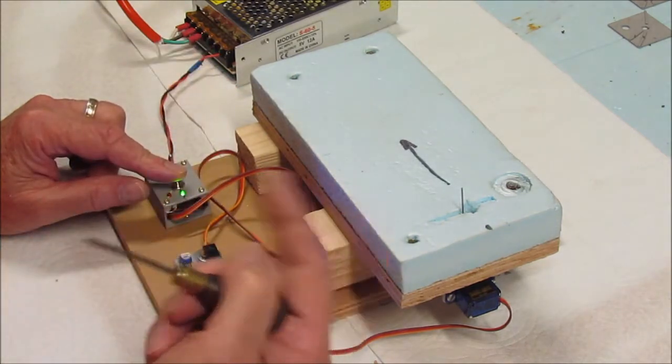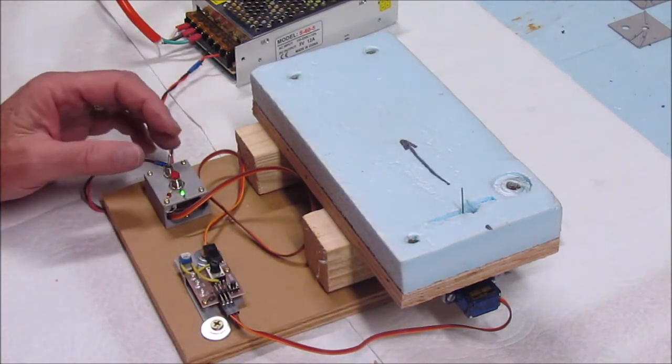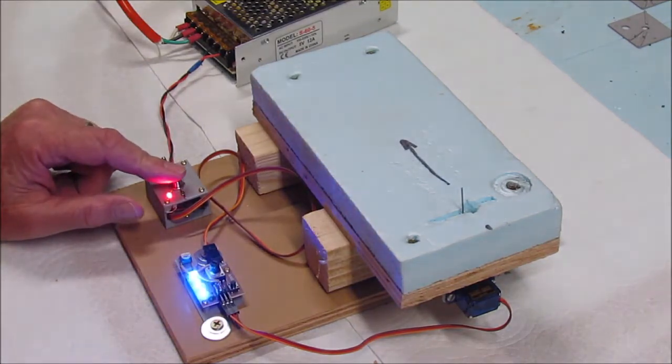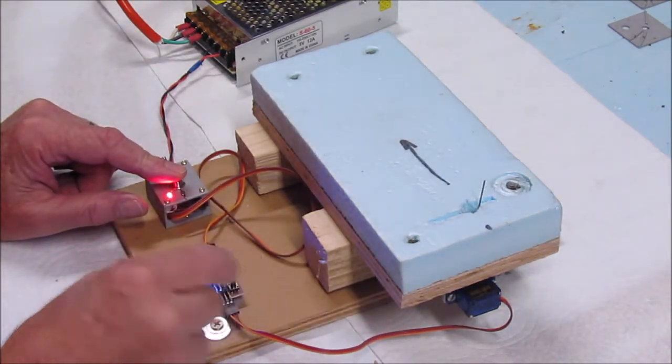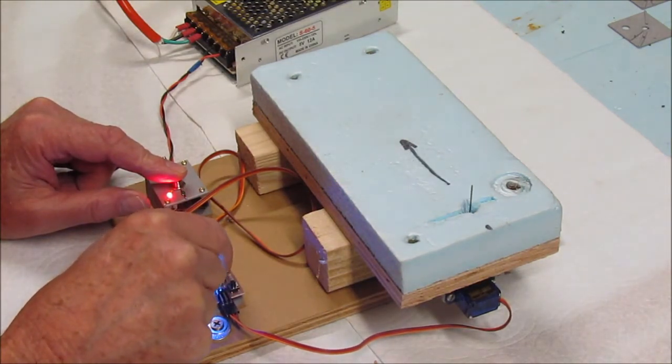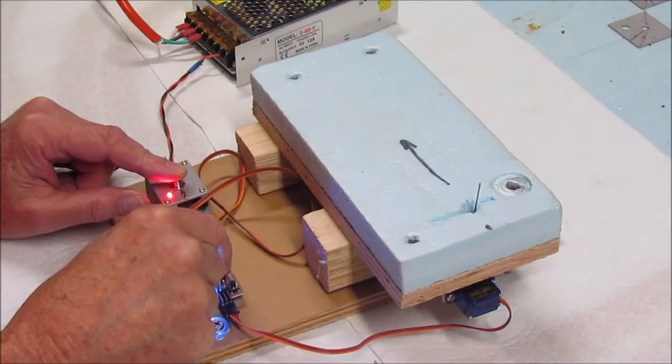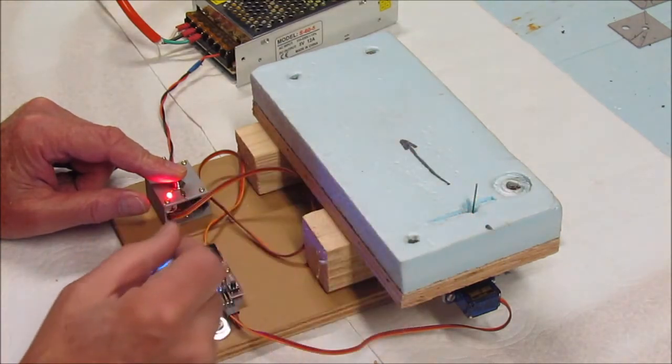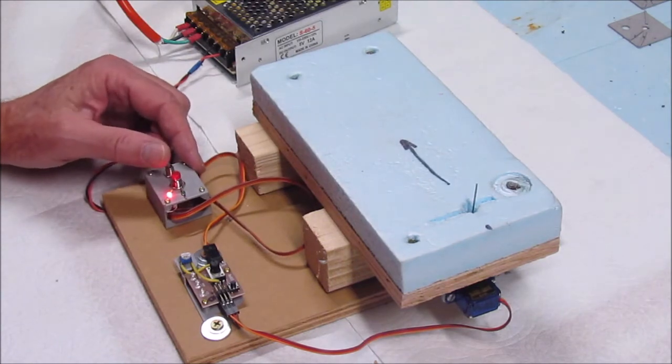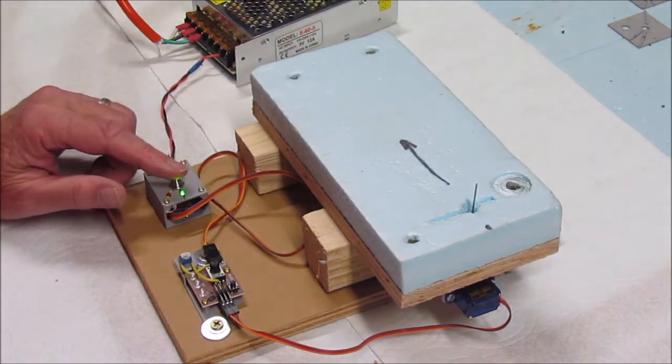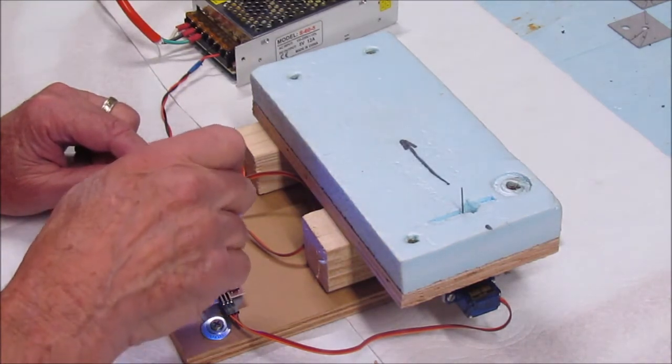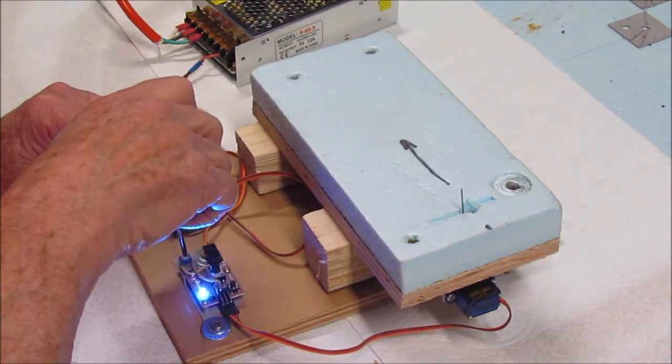Now I'll flip the switch over to the other side, and using the big pot, I can adjust the throw on that side. So I'll bring it in a little bit. I'll throw the switch back to the main route, push the button. Now I can take the trimmer pot and adjust it.